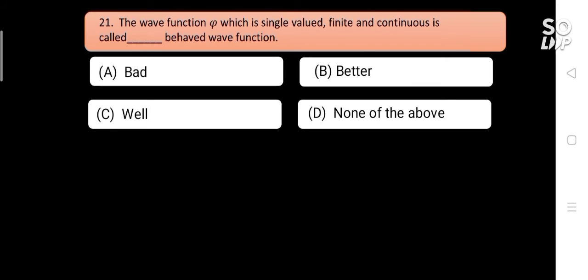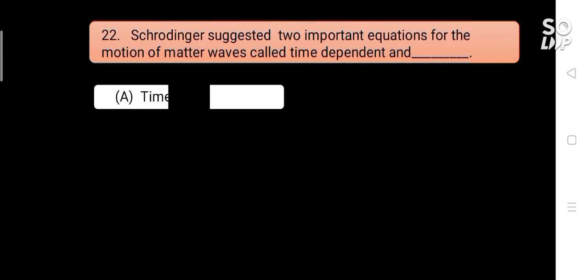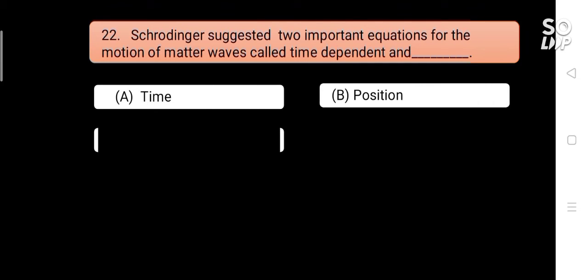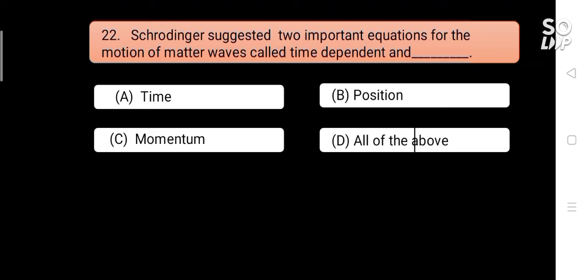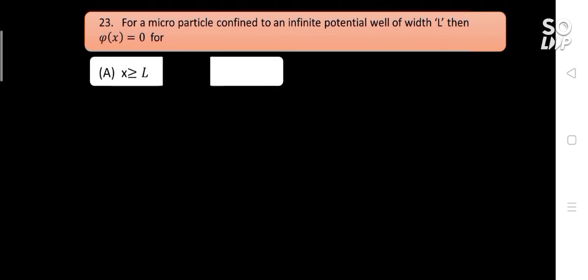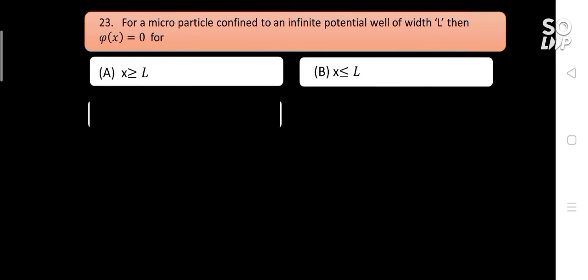Schrödinger suggested two important equations for the motion of matter waves called time-dependent and blank-independent equations. Options are: A) time, B) position, C) momentum, D) all of the above. Answer is A) time.